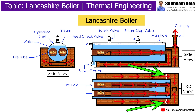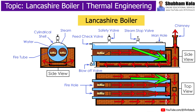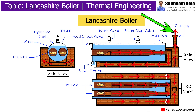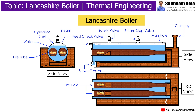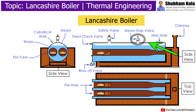Dampers are provided at each side channel to regulate airflow. The waste gases are released into the environment through the chimney. Air being a poor conductor of heat acts as a heat insulator. The steam produced in the drum shell is taken out from the upper side and allowed to flow through the steam pipe.